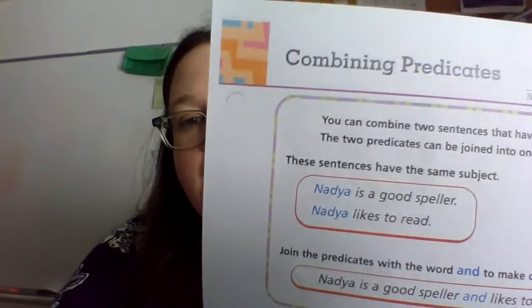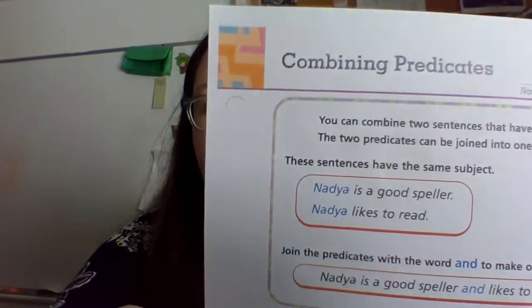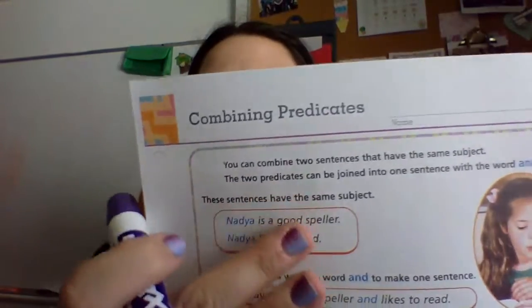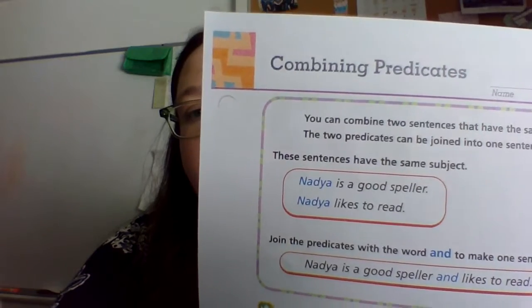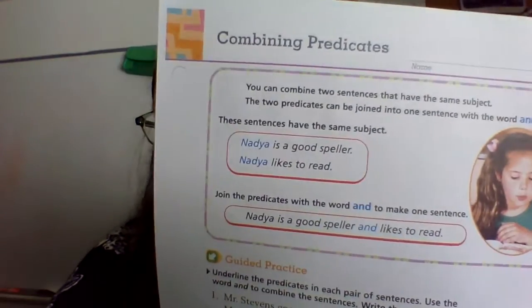The next thing we're doing is combining predicates. Predicates is the last part of a sentence. So right here you can see: 'Nadia is a good speller' and 'Nadia likes to read.' Because Nadia is the same, you don't have to repeat those parts. You could say 'Nadia is a good speller and likes to read.' Do you see how that 'and' combines the two predicates together? So you're just looking for what's the same and what's different — put 'and' between the two things that are different.